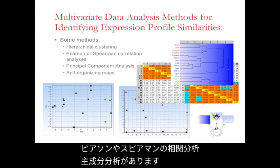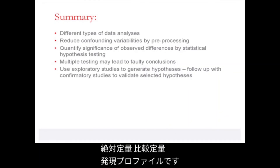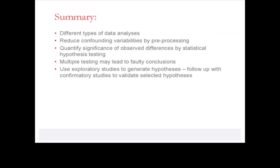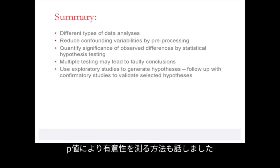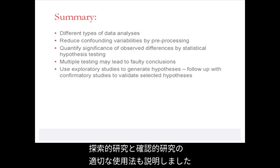In this presentation we have introduced three different types of qPCR data analysis: absolute quantification, relative quantification, and expression profiling. We have referred to techniques to reduce confounding variabilities and talked about why this is desirable. We also talked about how we can quantify significance using p-values, discussed some of the dangers of multiple testing, and described the appropriate ways of using exploratory and confirmatory studies.